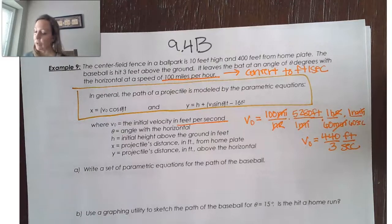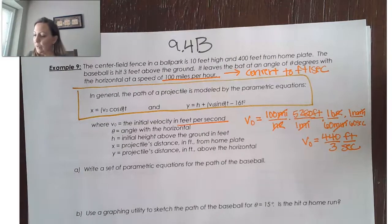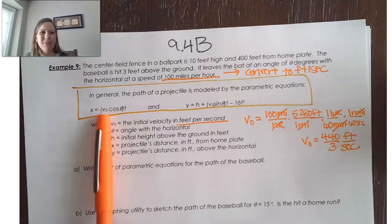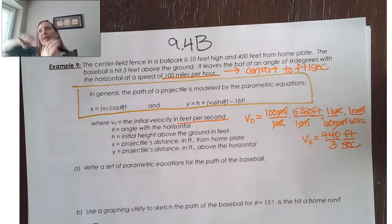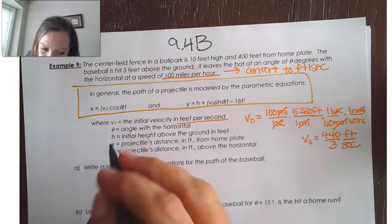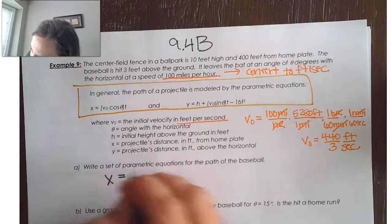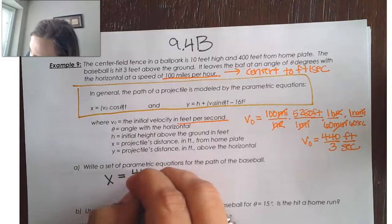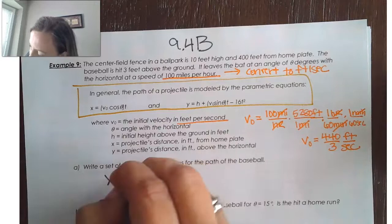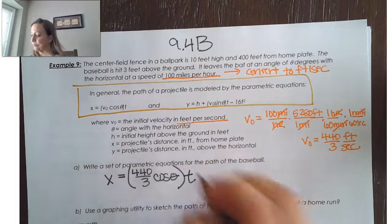And if I fraction that up, or simplify just for time's sake, I see that my velocity will be 440 over 3 feet per second. Really cute number, right? Okay. So, that's really the information that we needed to know here. We're going to leave theta alone, because theta could be several different angles. So, the x equation that we're going to have is 440 over 3 cosine theta times T. That's our coefficient of t.